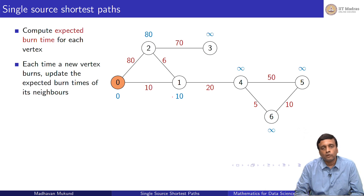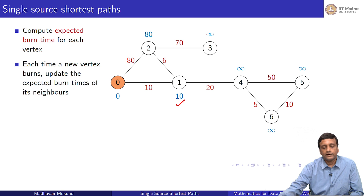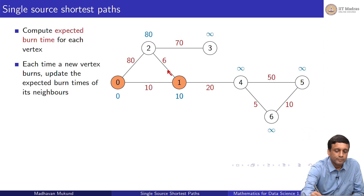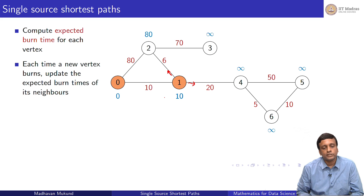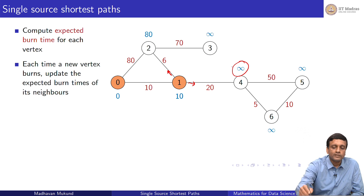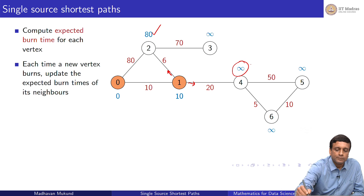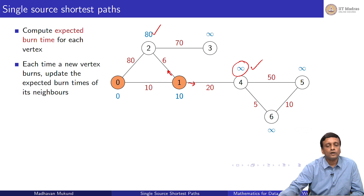Now I look at all vertices and find the one with the smallest time to burn. The smallest time to burn at this point is 10 — so vertex 1 burns next. When I burn vertex 1, it starts two new fires. I already believed vertex 2 would burn at time 80, but now I can tell it cannot burn later than time 16. And vertex 4, previously unknown, will definitely burn by 30. So I update these entries to 16 and 30.